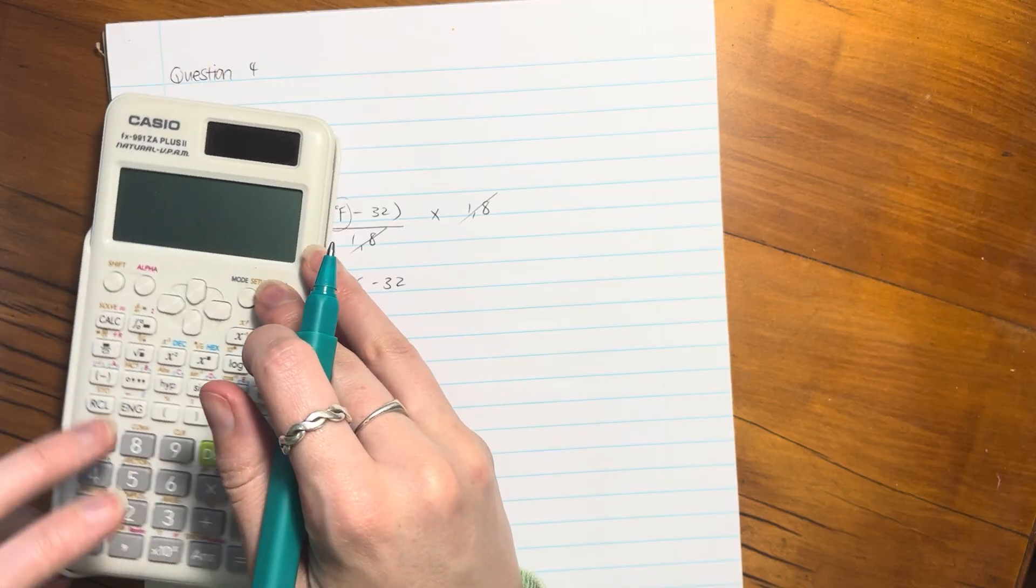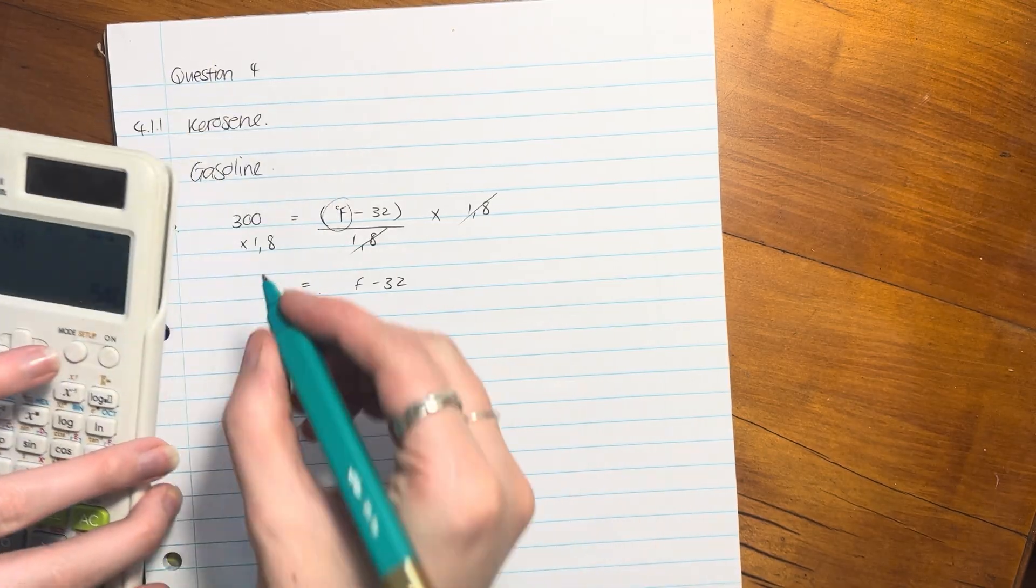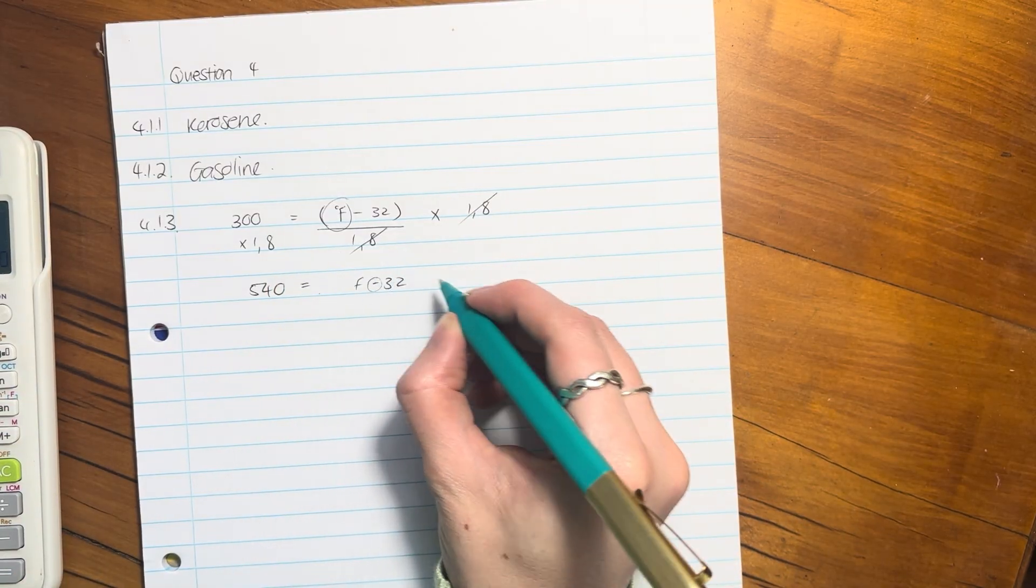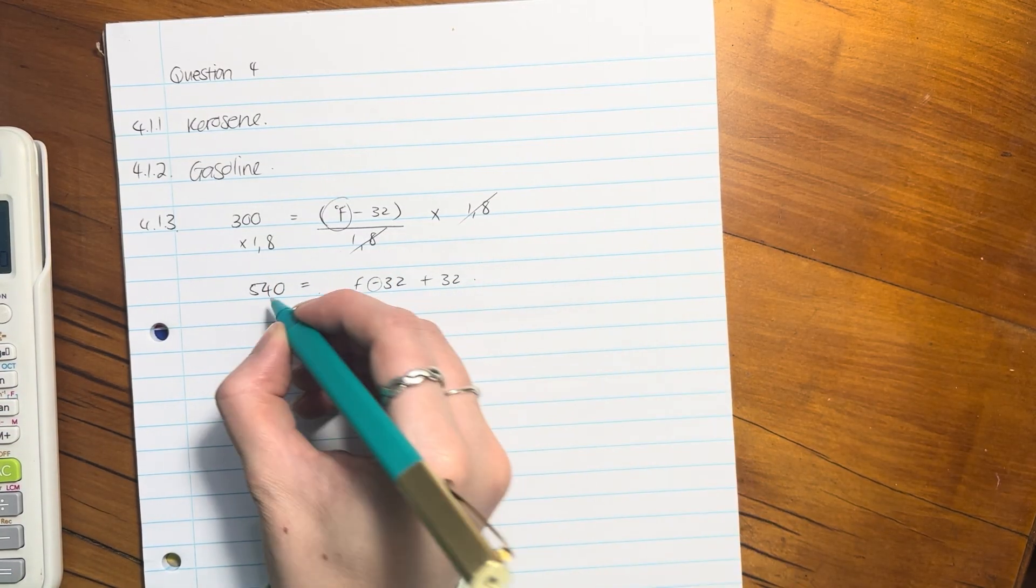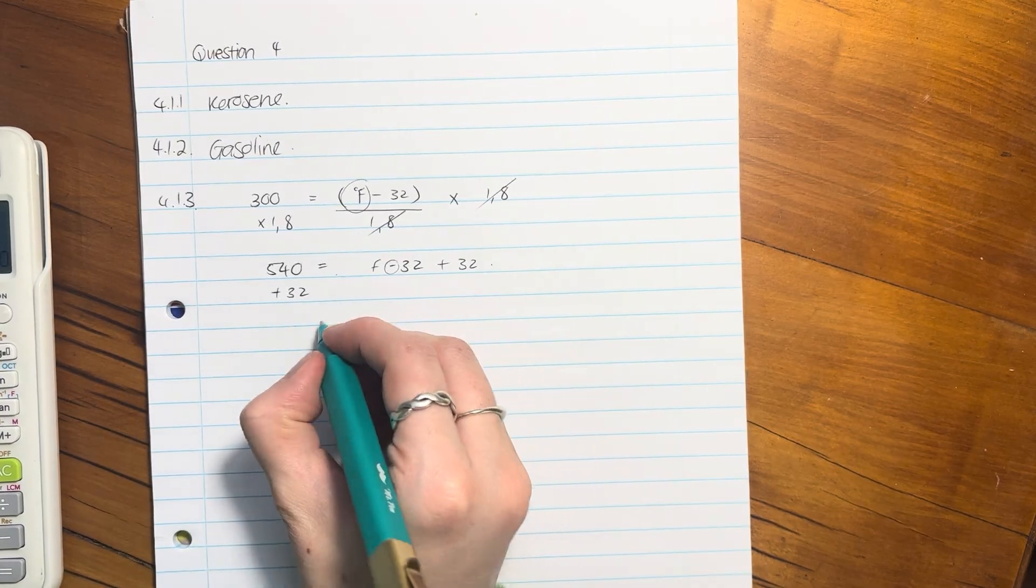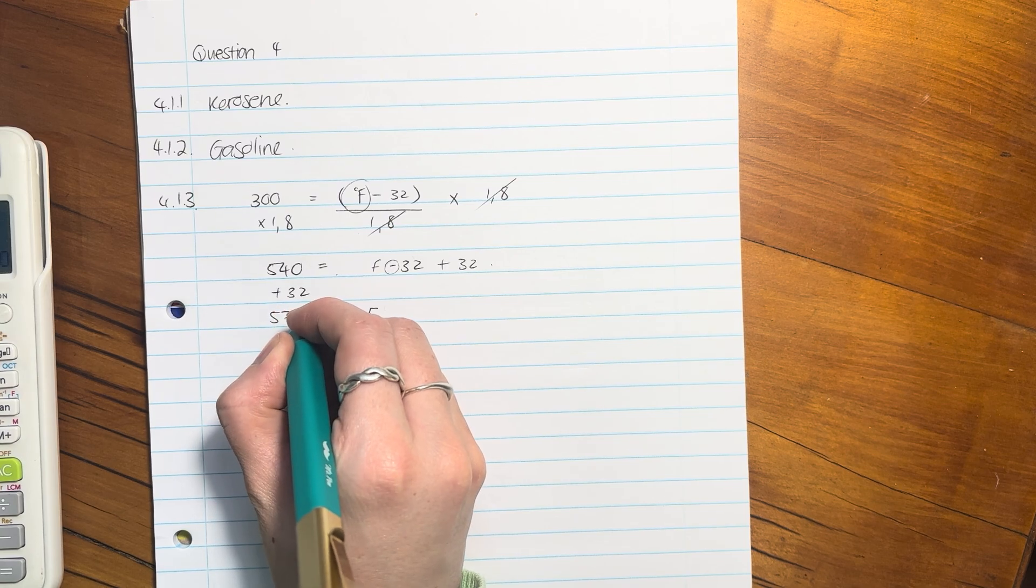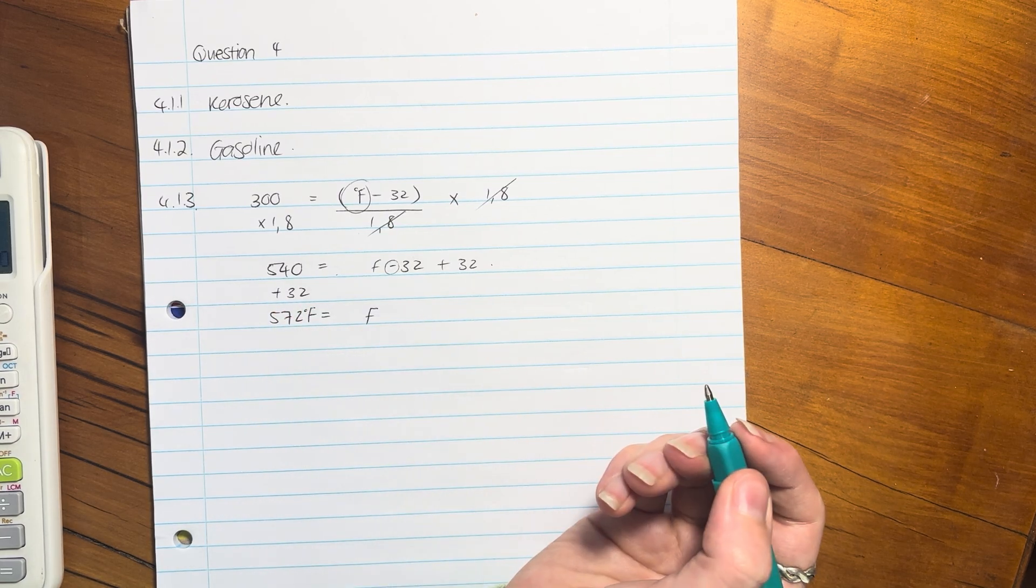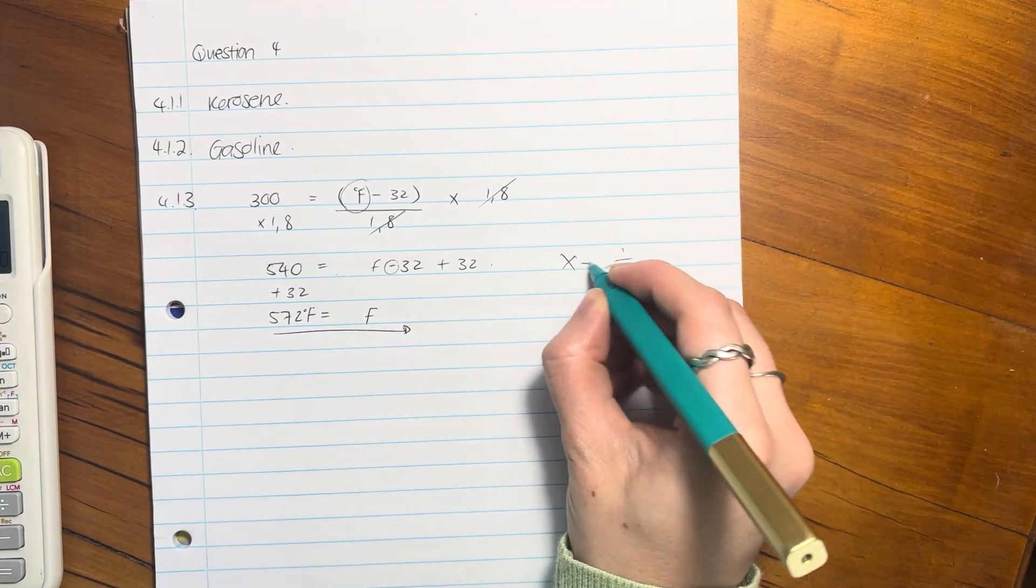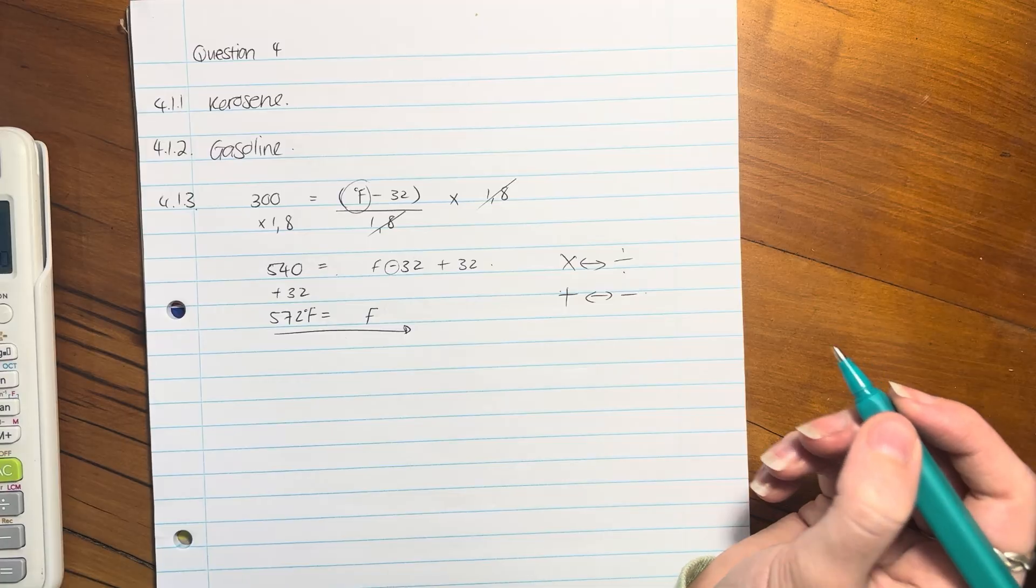I'm going to get my calculator. 300 times 1.8 is going to be 540. Now we're going to get rid of the negative 32, so we're going to plus 32. We have to do to the other side what we do to the first side, and then Fahrenheit is going to be 572 degrees Fahrenheit. Big thing here is opposite operations, very important.